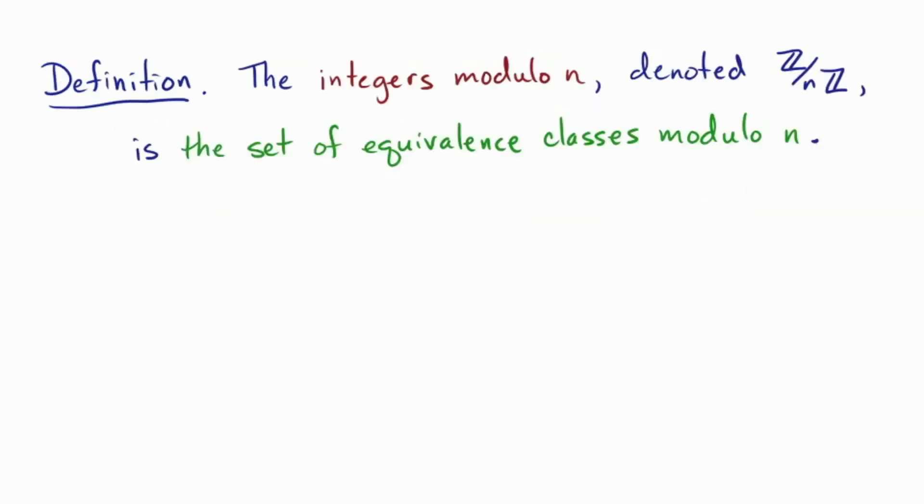Okay, finally, we can also give a name to the whole collection of equivalence classes. Definition. The integers modulo n, denoted Z mod nZ, is the set of equivalence classes modulo n. For example, Z mod 4 Z has four elements: the equivalence classes represented by 0, 1, 2, and 3. This is because the 4 clock has four arms. Every integer falls into one and only one of these classes, because every integer has a remainder of either 0, 1, 2, or 3 when divided by 4. Of course, we don't usually bother writing this so formally, and we just use the congruence notation we're used to, without any square brackets and all that jazz, but for this video we're being very careful to be formal.